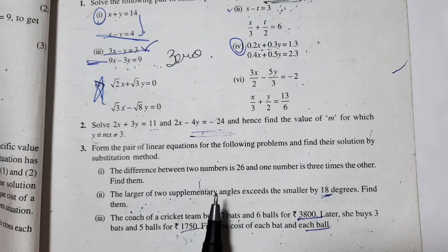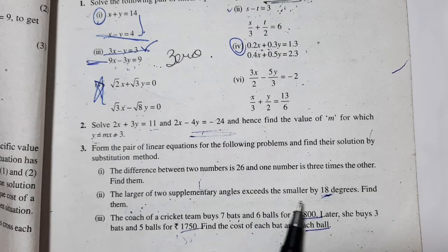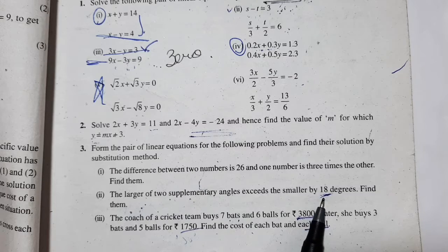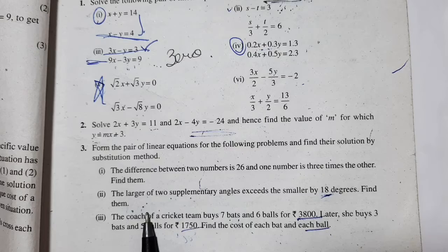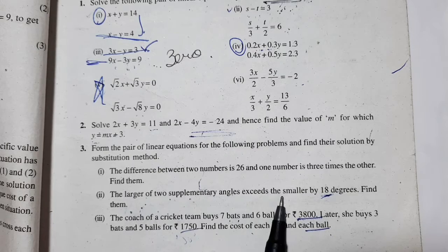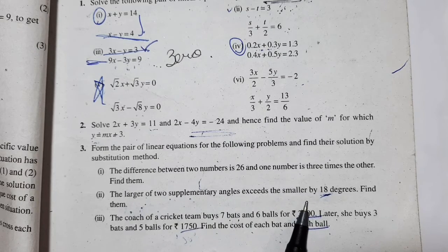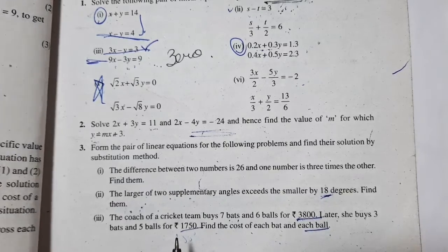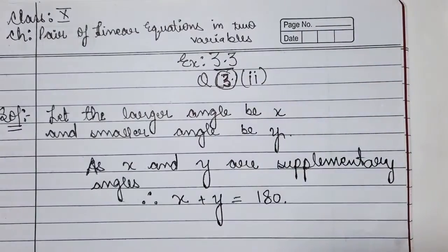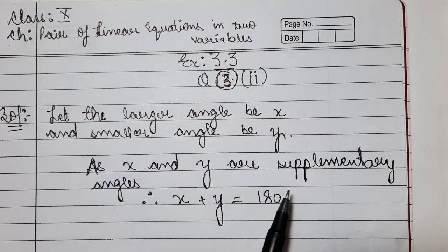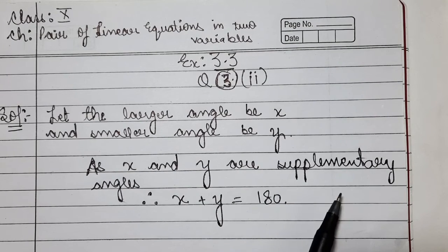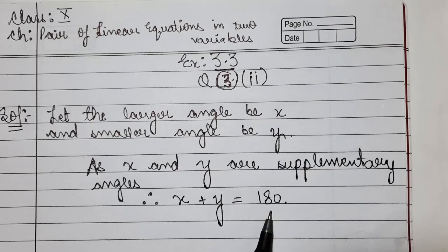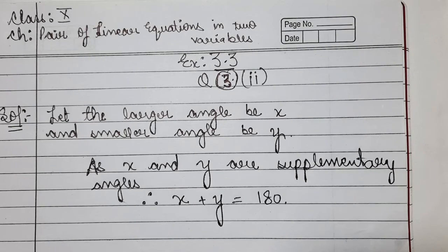The bigger angle in the two supplementary angles exceeds the smaller by 18 degrees, so we have to find out those angles. Let the larger angle be x and the smaller angle be y. Now these two angles are supplementary, and we know about supplementary and complementary angles studied in earlier classes.